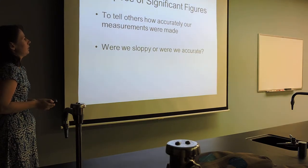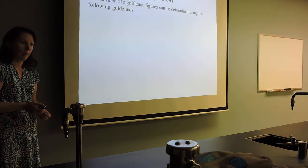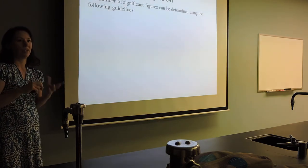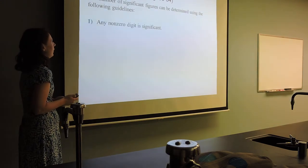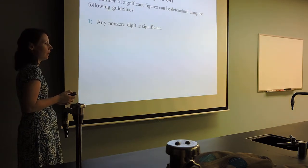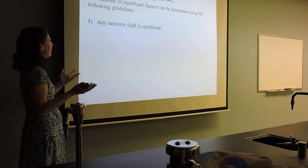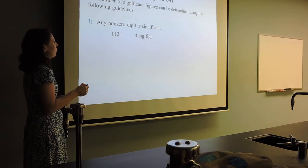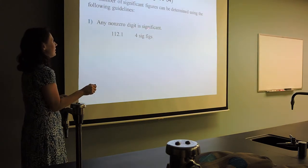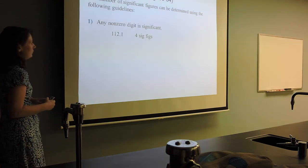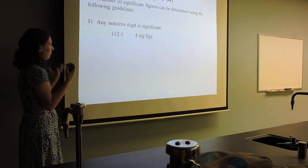We have to use some rules to figure out how many significant figures are in a measurement. These are rules you're just going to have to commit to memory, and they'll be a little clunky at first — it'll take some practice. The first two are the easiest: any non-zero digit is significant. If it's a number between one and nine, it's a significant digit because it's not a zero. So the number 112.1 has four sig figs — all four are significant because they are not zeros.